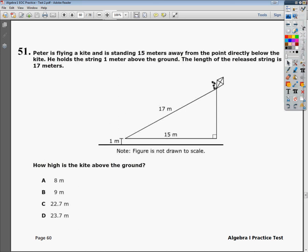You have a nice triangle here, and I'm going to make a note to myself that this is plus 1. Whatever answer I get, I need to add 1 to it because he's a meter above the ground.